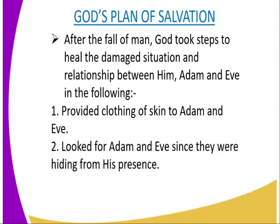Another part of God's plan: since Adam and Eve were hiding from his presence after eating the forbidden fruit, they realized they had sinned against God and started hiding. God called out their names, but they were hiding. However, God knew where they were and looked for them, provided them with skin for their clothing, and told them not to hide.